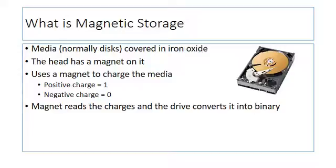The magnet reads charges and the drive converts it into binary. The easy way to think about how this really operates is to imagine an old school LP player. The LP player has a needle, and as the LP moves around, the needle is able to play the music. It's exactly the same concept with magnetic storage — the needle goes along the disc, scans and looks for the ones and zeros, looks for the positive charge or the negative charge, and that's how it works.